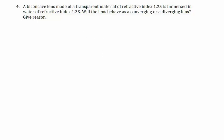In this example, it is given that a biconcave lens is made of a transparent material of refractive index 1.5. We can write that refractive index of lens equals 1.25, and it is also given that it is immersed in water and water's refractive index is 1.33.